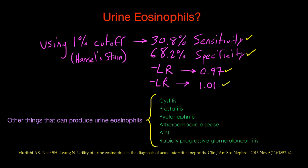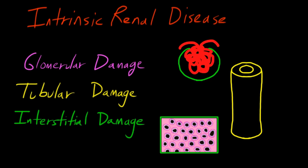Many different things can cause eosinophiluria and a positive urine eosinophil test — bladder and prostate infections, pyelonephritis, atheroembolic disease, ATN, and rapidly progressive GN — so it's just not that specific. You probably get more value from examining the patient for other clinical signs and symptoms, and checking the medication list for any drug known to cause AIN. That concludes this overview of intrinsic renal disease.